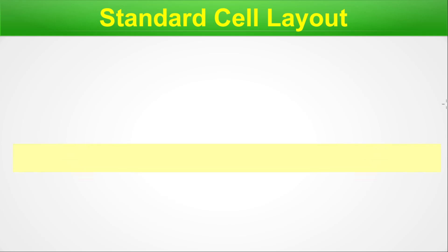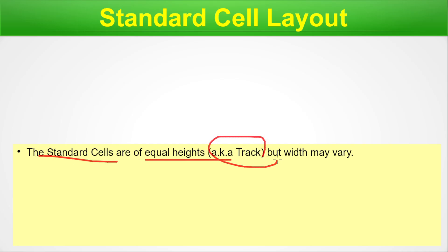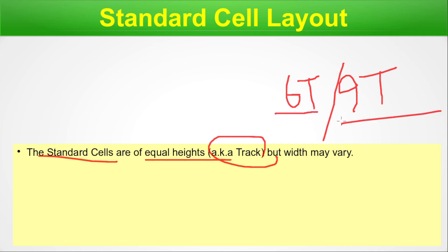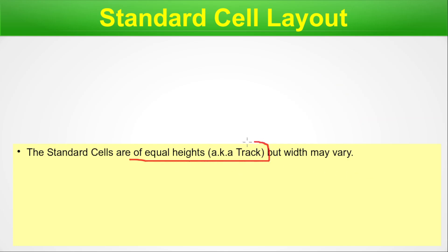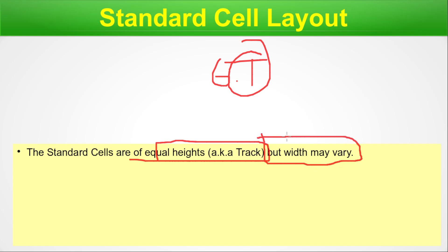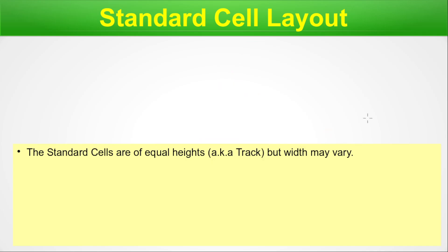Standard cell layout. Here we will talk about how the standard cells are laid in a particular manner during ASIC design. The standard cells are of equal heights — this is called a track. Sometimes you hear about 6T or 9T standard cells; these numbers are multiples of the track, indicating how many tracks the cell height spans. The standard cell expands in height not in width, and the width will vary from one cell to another. However, when the height is kept to a particular track length like 6T, 7T, or 9T, different tracks are available on which the standard cell will be laid down.